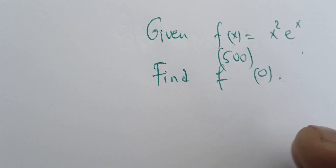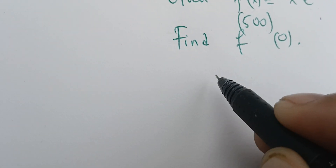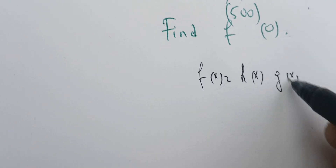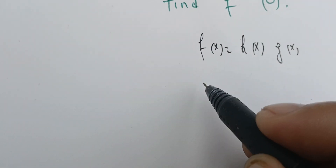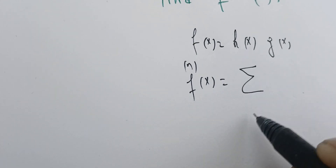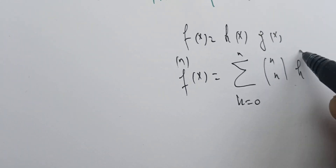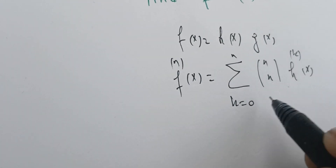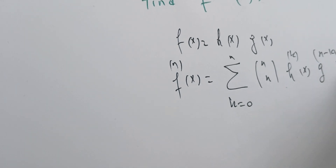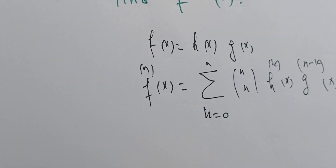The Leibniz rule states that if we have differentiable functions and f(x) can be written as the product h(x)·g(x), then the derivative of order n of f is the sum with k going from 0 to n of n-choose-k times the derivative of order k of h, times the derivative of order n−k of g.